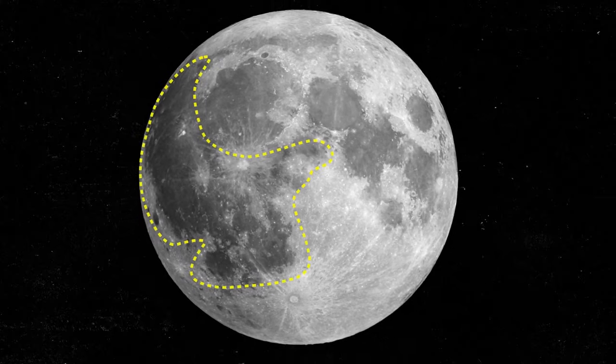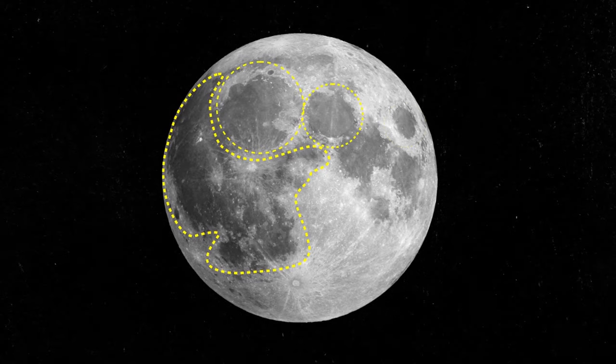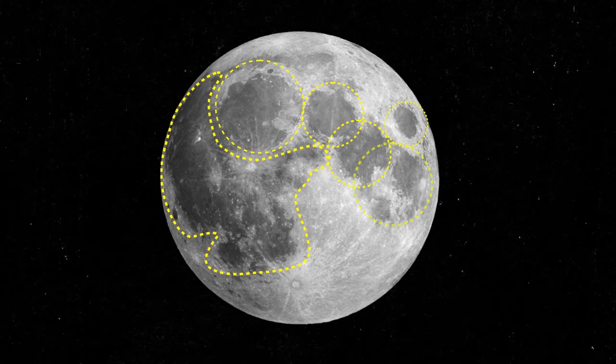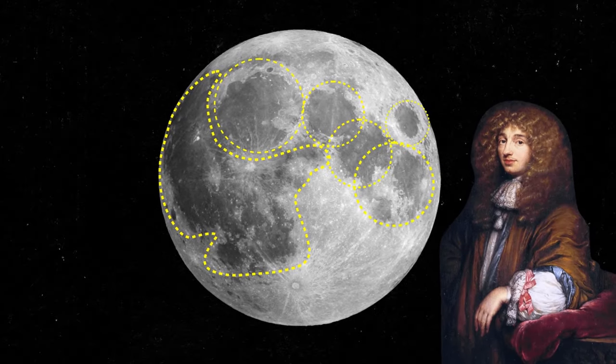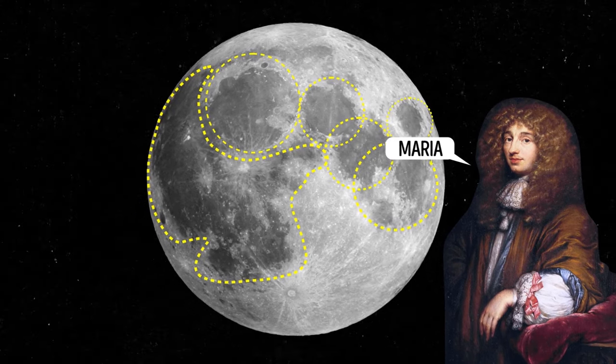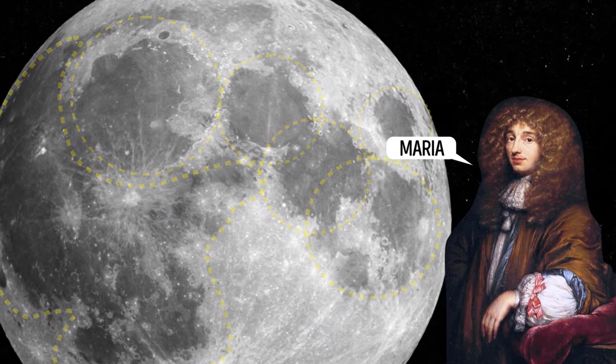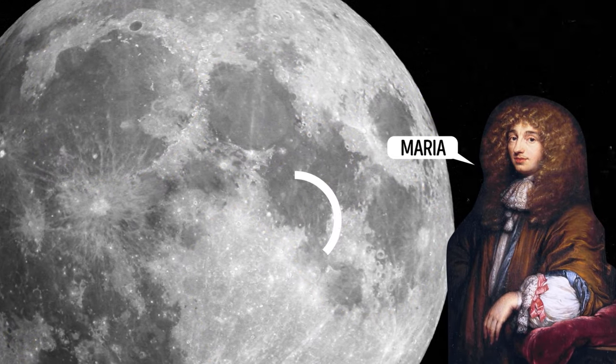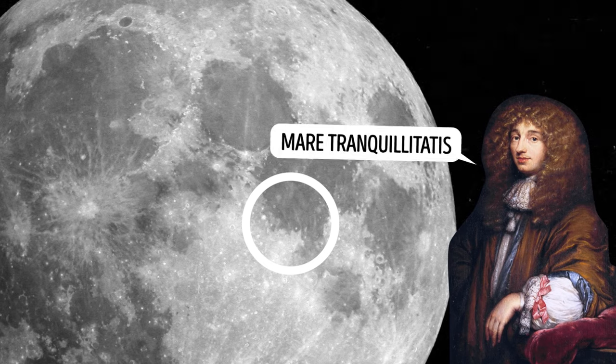A long time ago, in the 17th century, astronomers saw large, dark spots on the moon's surface. One of these astronomers thought these spots looked like oceans, and he called them maria, which means seas in Latin. Other astronomers also made maps of the moon, and they used the term maria to describe these dark spots.